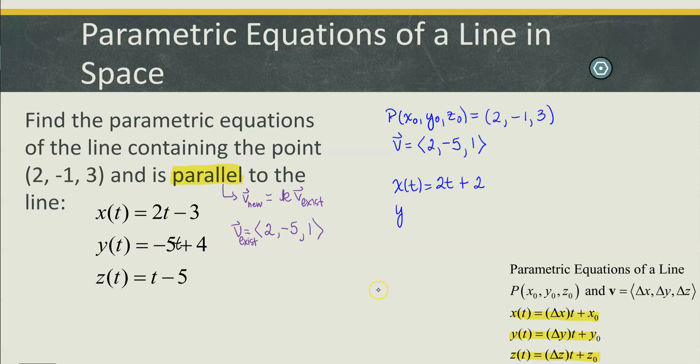y of t is my change in y from my direction vector, so negative 5, then times t plus the y coordinate from my point, and of course I could write that as negative 5t minus 1 if I prefer.